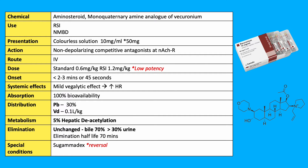The systemic effects are mild and can cause a mild increase in heart rate. Distribution: 30% protein bound and has a volume of distribution of 0.1L per kg. Metabolism: it undergoes minimal hepatic metabolism — 5% deacetylation — and is mainly eliminated unchanged in the bile and urine. The elimination half-life is 70 minutes and it can be reversed with Sugammadex.